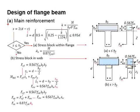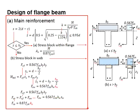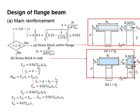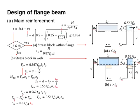The flow chart summarizes the design process of a flange beam. First, you need to determine whether the stress block is within the thickness of the slab — this is very important for determining the moment resistance of the beam. Based on the stress block diagram, the beam moment resistance is determined by F_ST multiplied by Z for the T flange when the stress block is within the flange.